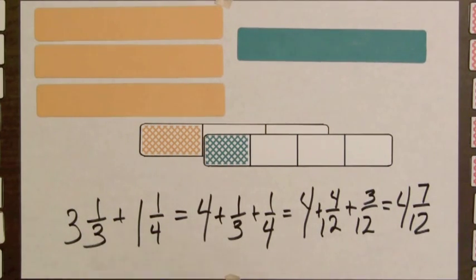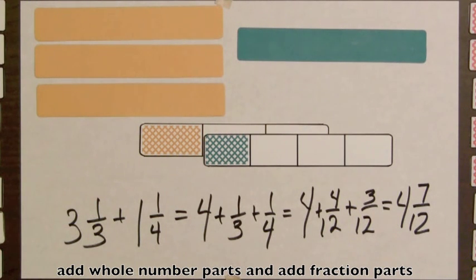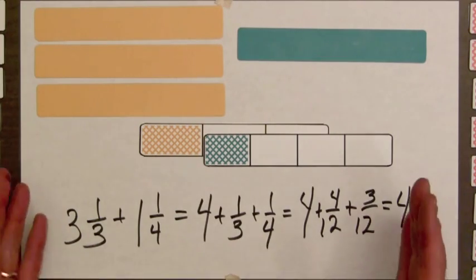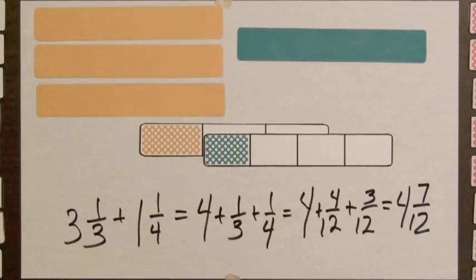So this is equal to four and seven-twelfths. So that's the sum of these two mixed numbers. So to add mixed numbers, we add the whole number parts and then add the fraction parts. And as usual, addition means put together.